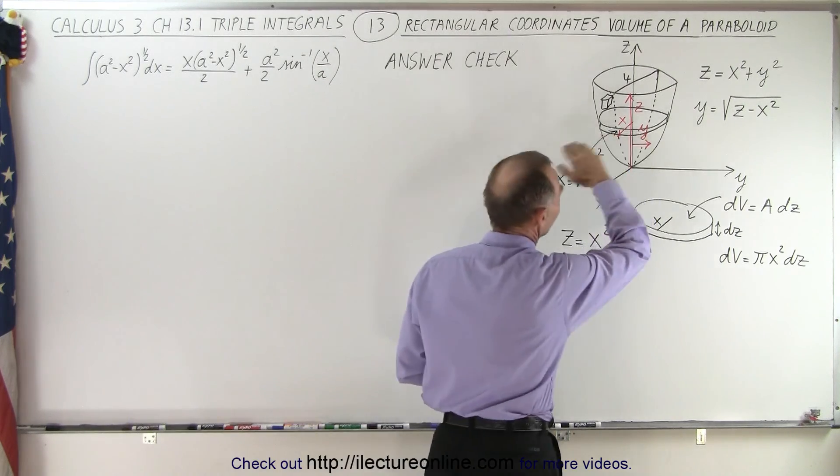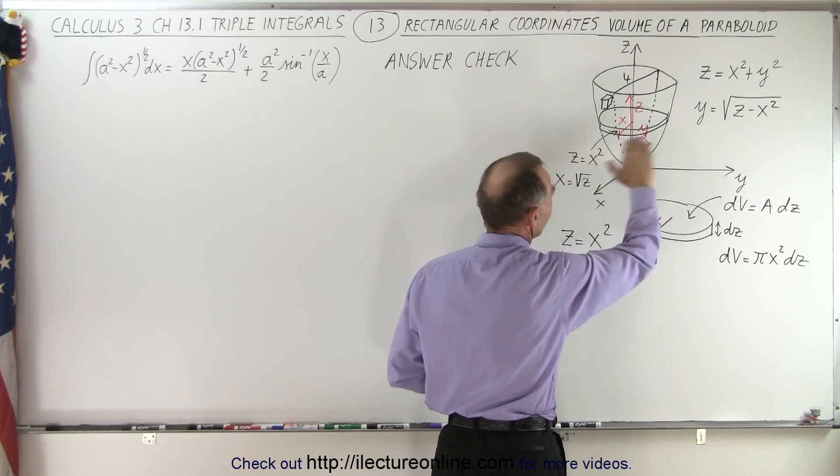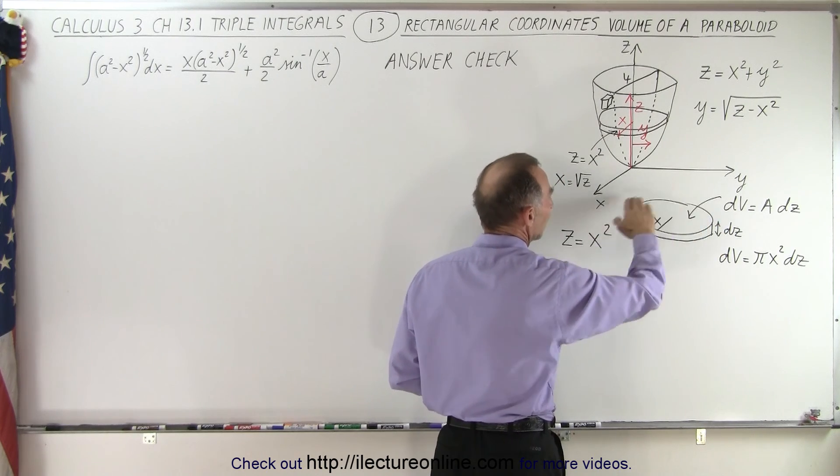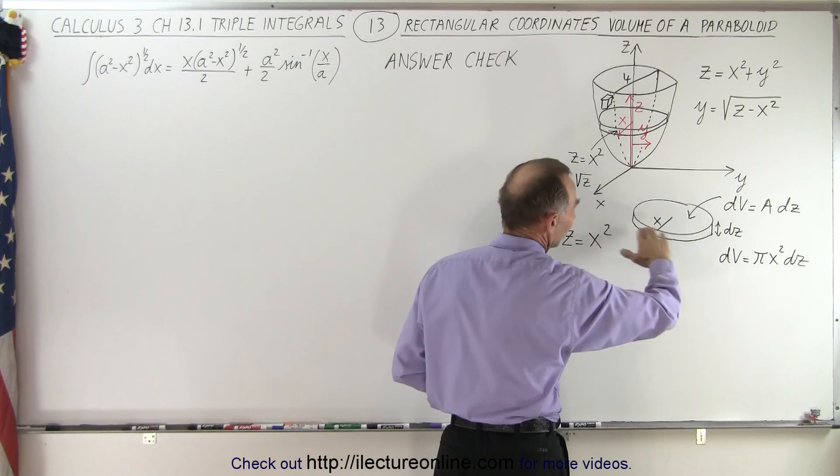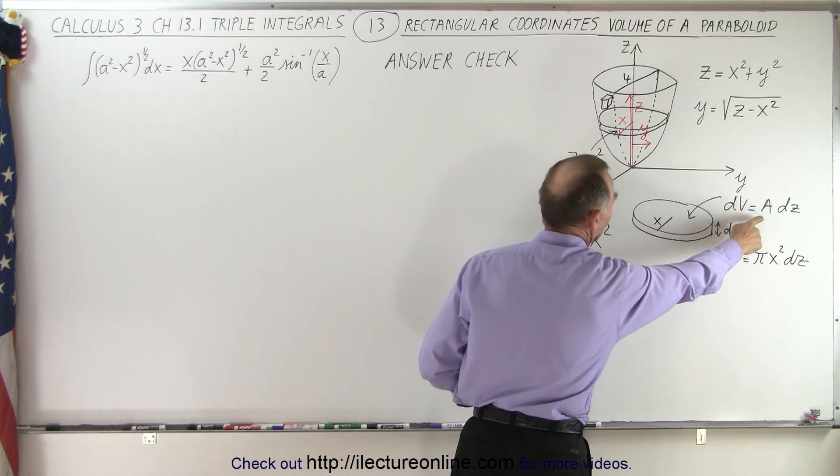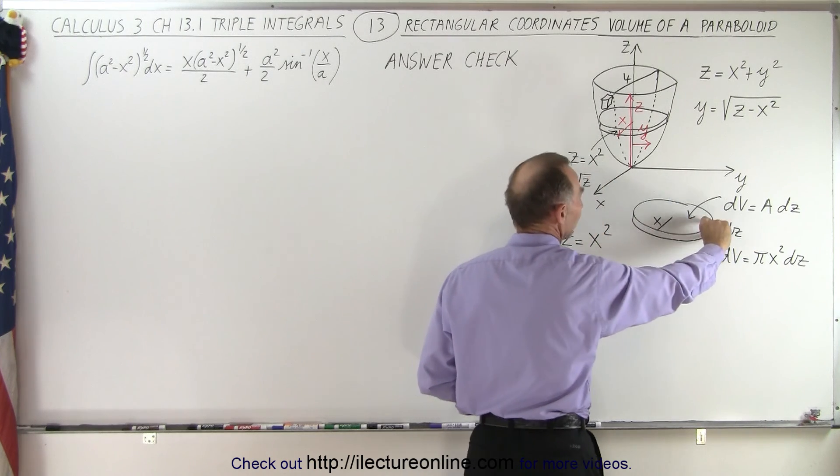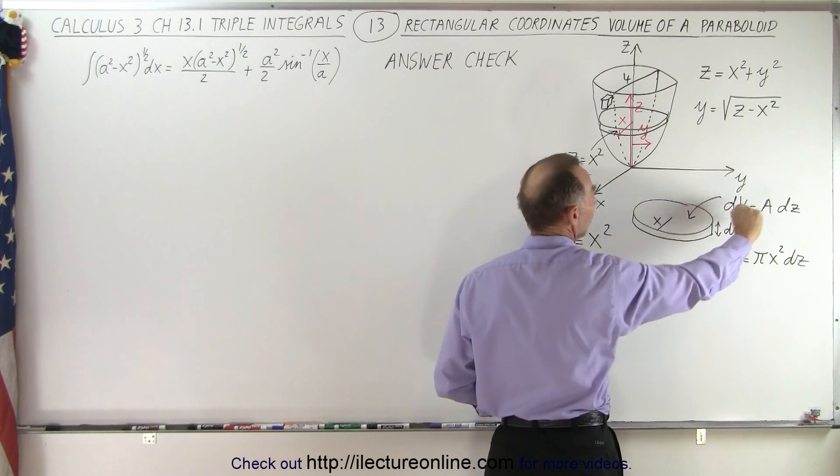We slice the paraboloid into thin little slices. Here we have the cross-section or the surface area of the slice, which would be the area, times the thickness of the slice, which would be a small dz.